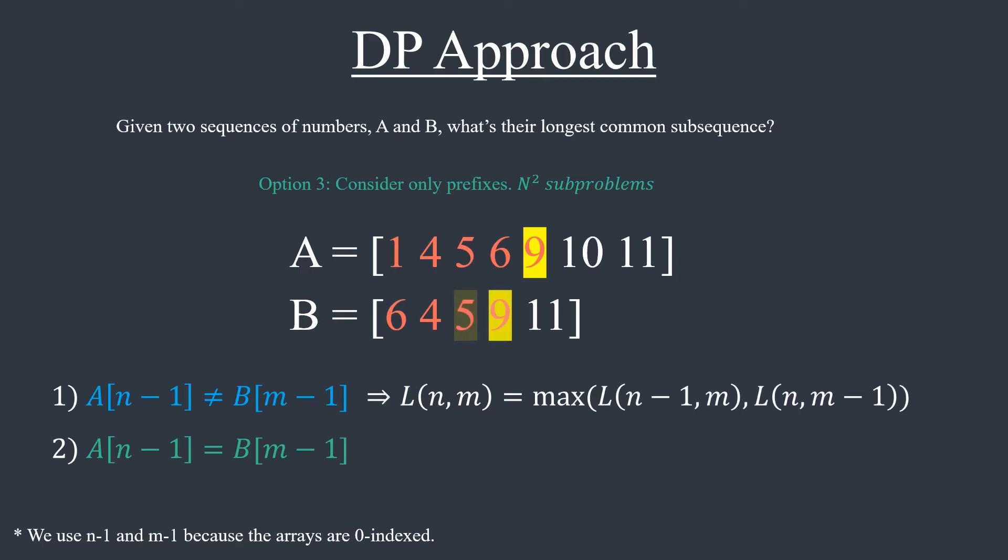Now let's look at the second case where the last elements are equal. This one is a bit trickier, but let me try to explain my thought process. In the first case, we said that at least one element is not in the longest common subsequence because they are different. Now that they are the same, maybe both elements are in the final solution. If both elements are in the final solution, then we can include both and solve the remaining sub-problem. In that case, L[i,j] would be 1 plus L[i-1,j-1].